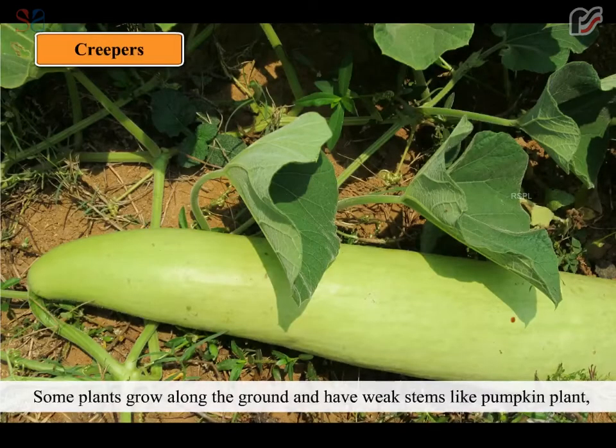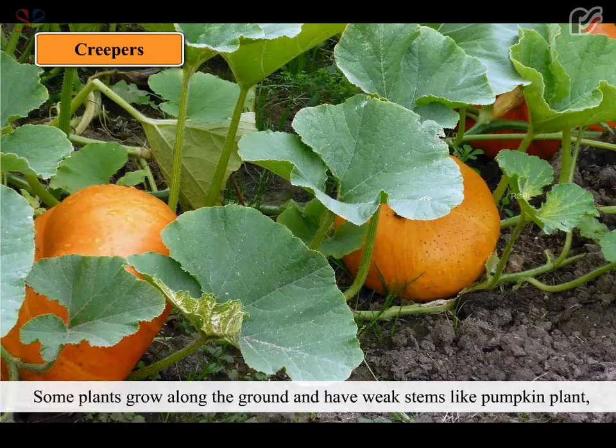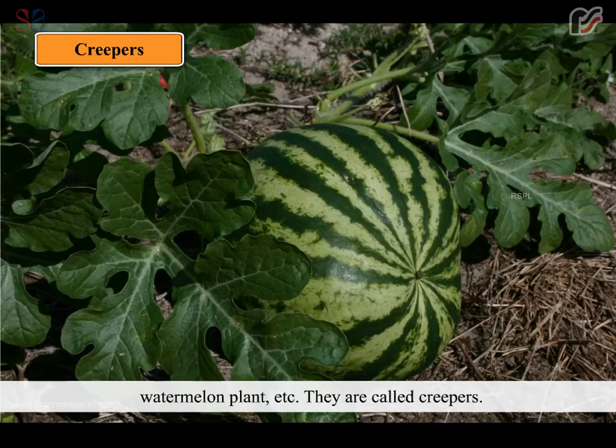Some plants grow along the ground and have weak stems. Like pumpkin plant, watermelon plant etc. They are called creepers.